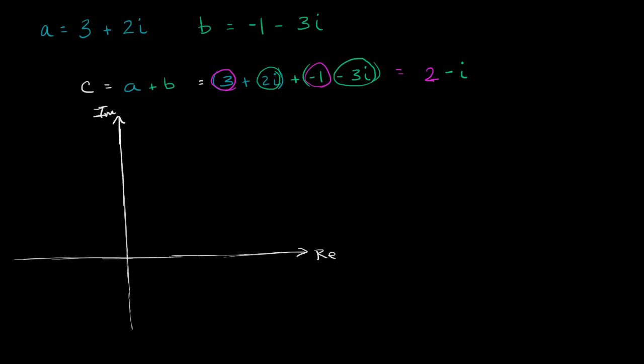And a is 3 plus 2i. So 1, 2, 3 along the real axis, and then 2 along the imaginary axis. The imaginary part is 2, 2i. So 3 plus 2i gets us right over there.